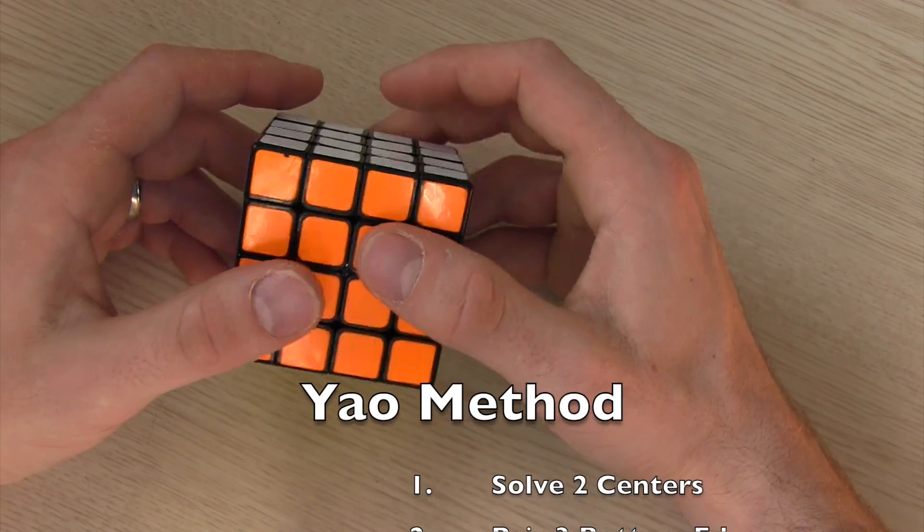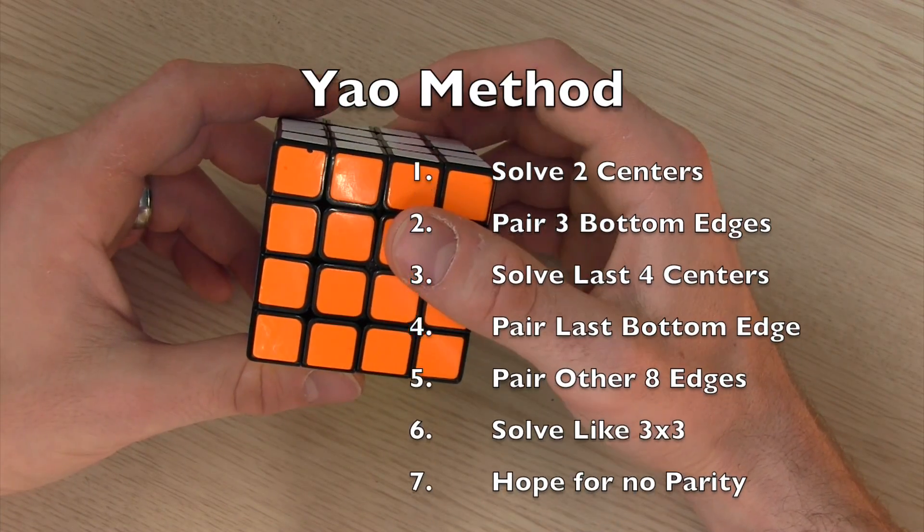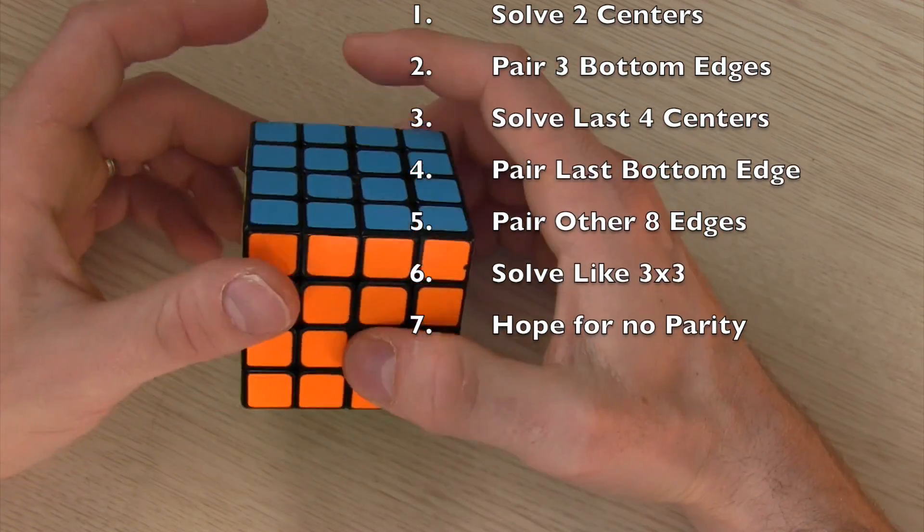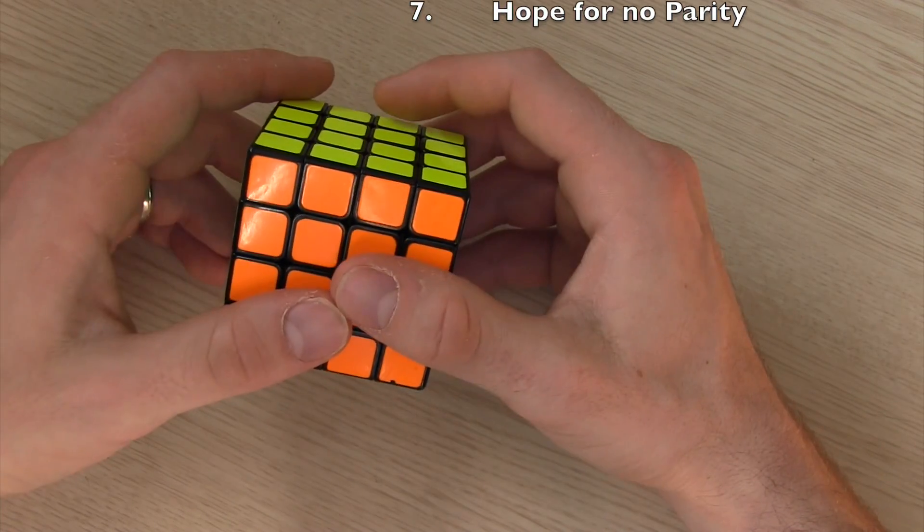In Yau method you solve two of the centers, three of the edges, the last four centers, and the last eight edges, and then you solve like a 3x3 and hope to not get any parity errors.